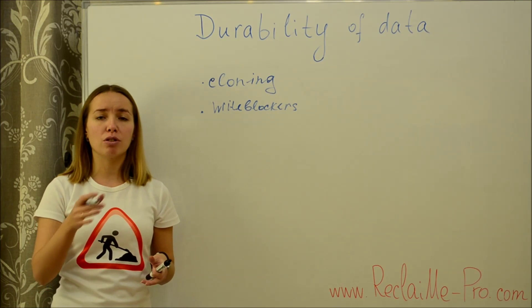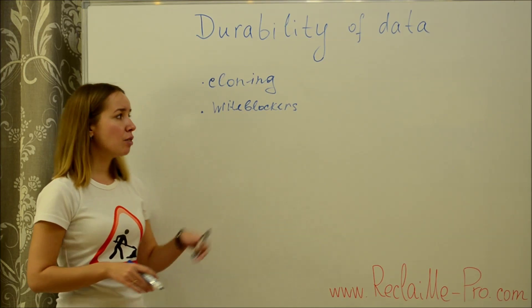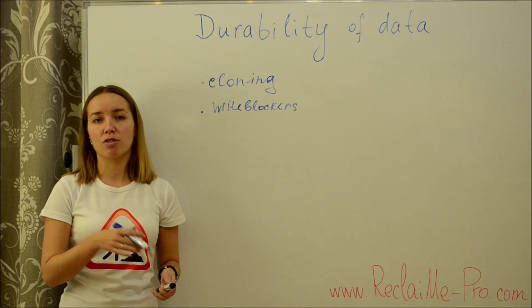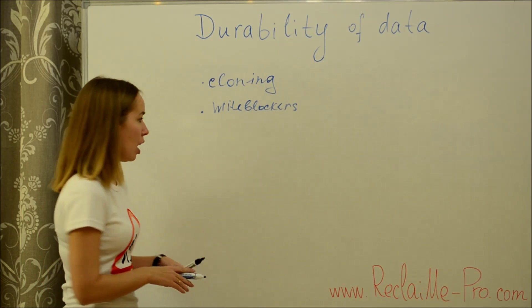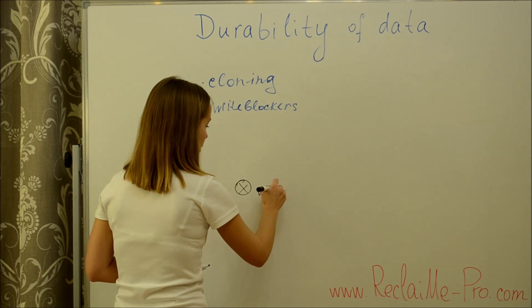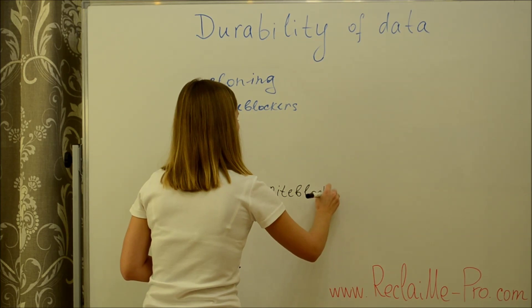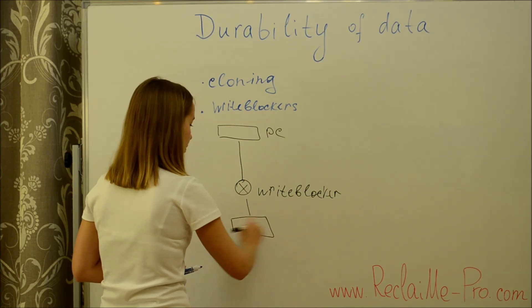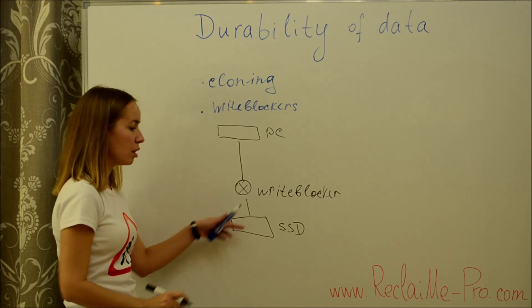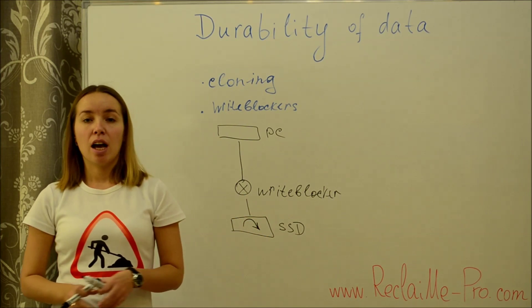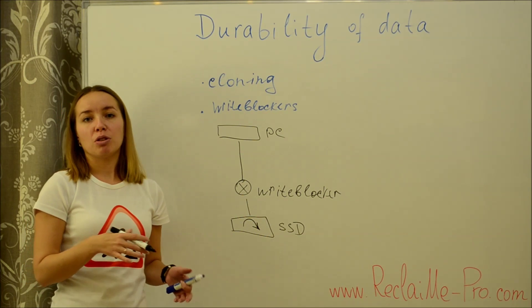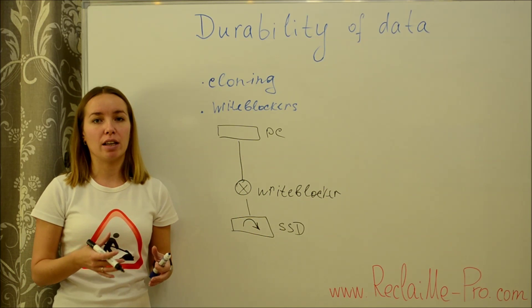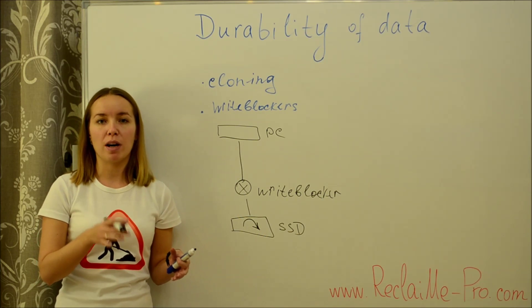As for write blockers, theoretically they may help. However, they are not immune from TRIM in a solid state drive. Because TRIM happens behind write blockers. Write blockers are between a computer and a solid state drive. However, TRIM is inside a solid state drive. Another problem with write blockers is that we do not know how a device reacts to write errors. Because many storage systems use journaling and therefore require the write access to the device to update its journal.